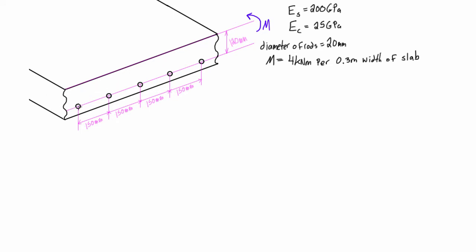We have evenly spaced rebar or steel rods running down the length of the slab. They're each 150 millimeters away from each other, and the actual width of the slab doesn't matter because we're applying four kilonewton meters of bending moment — pure bending — per 0.3 meters of slab. So for every 0.3 meters we're applying four kilonewton meters.